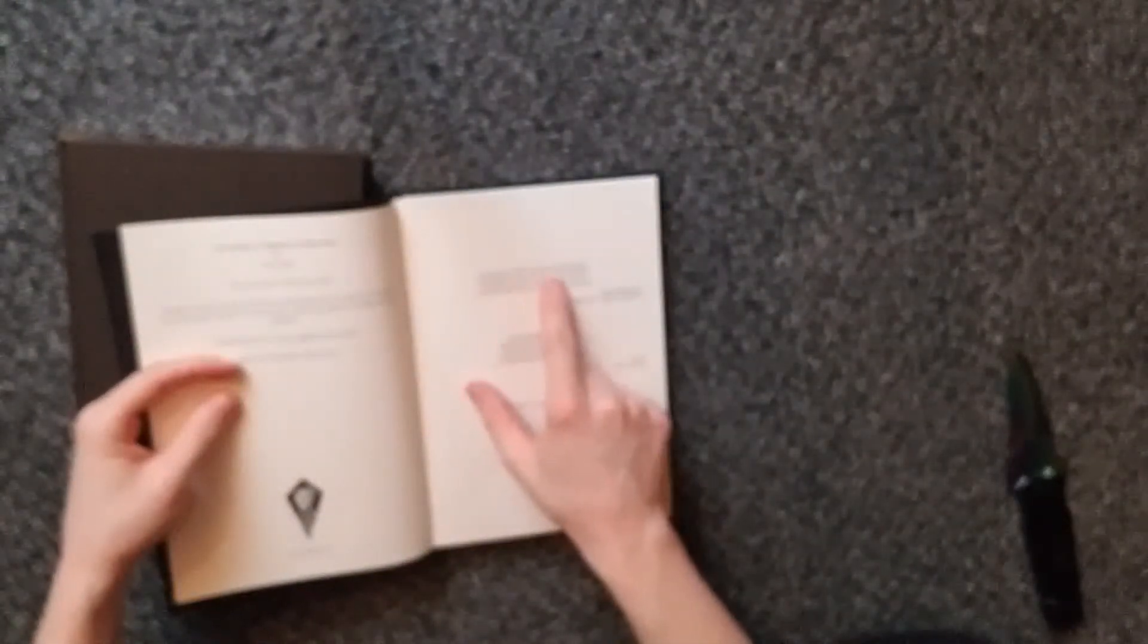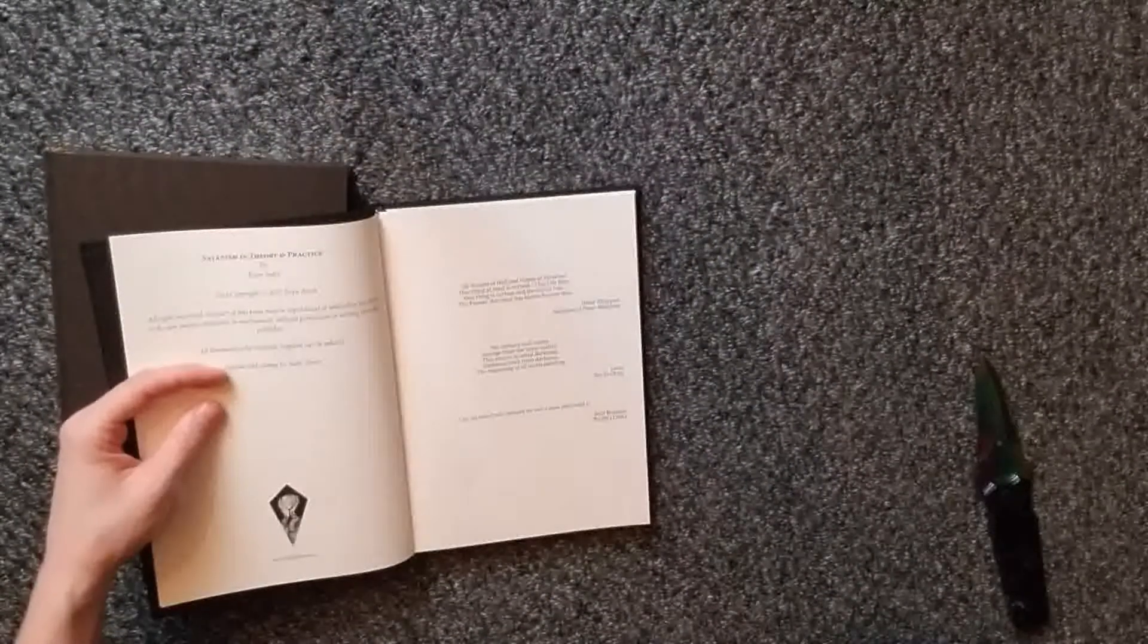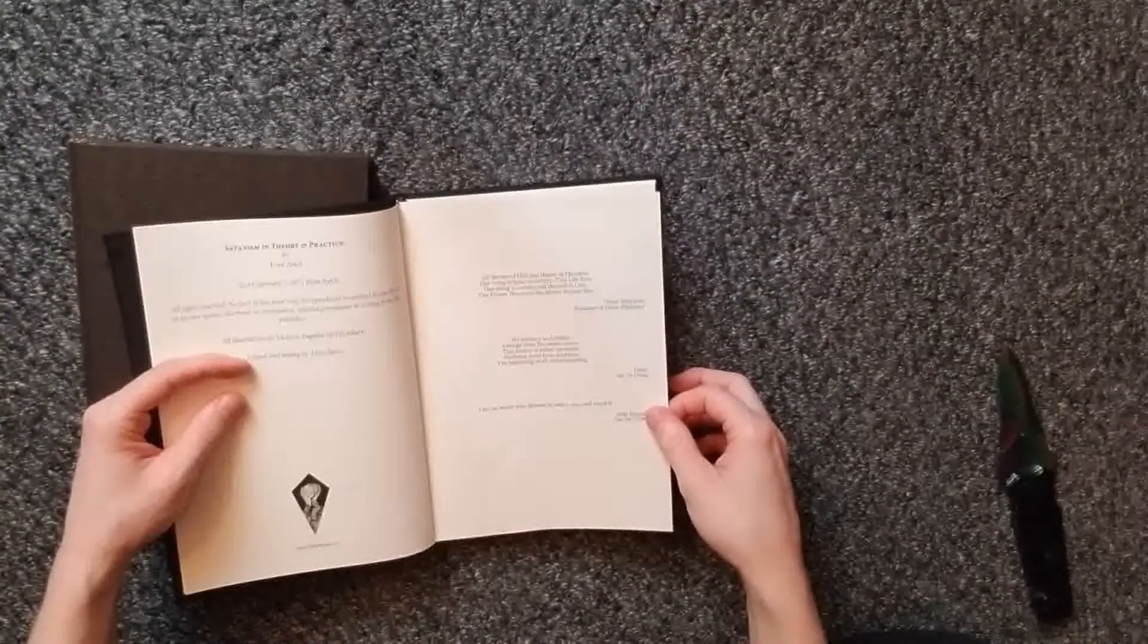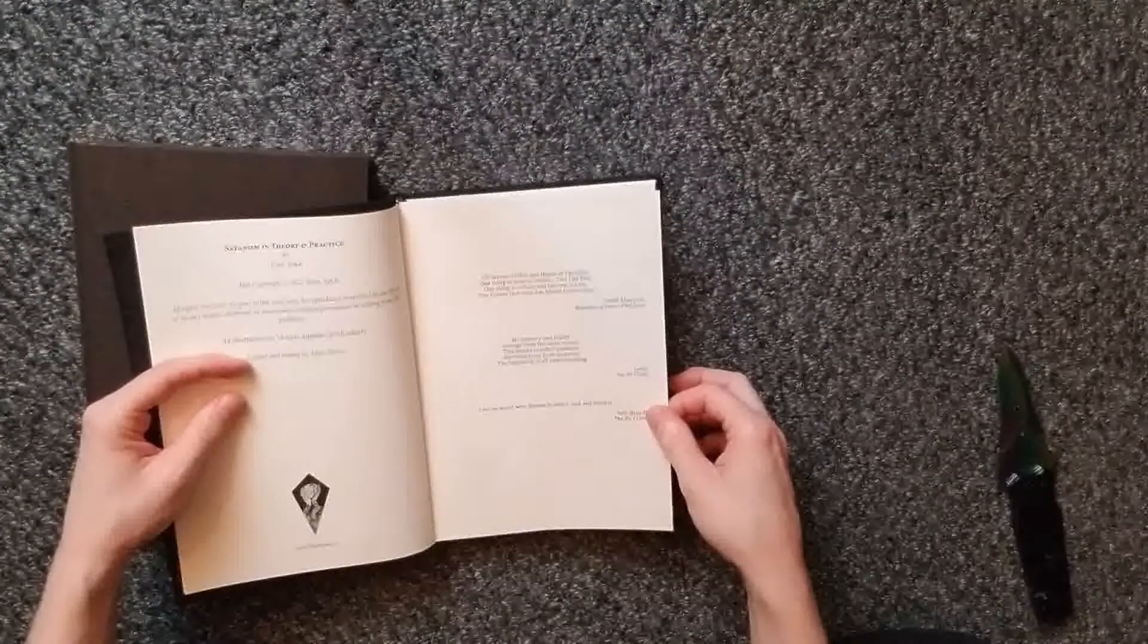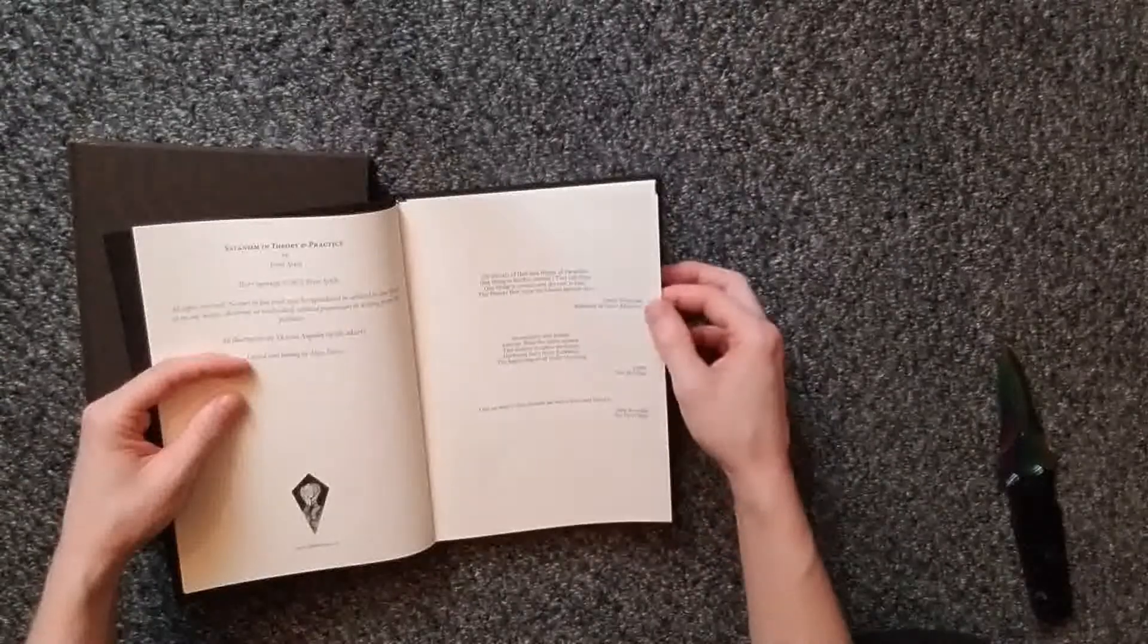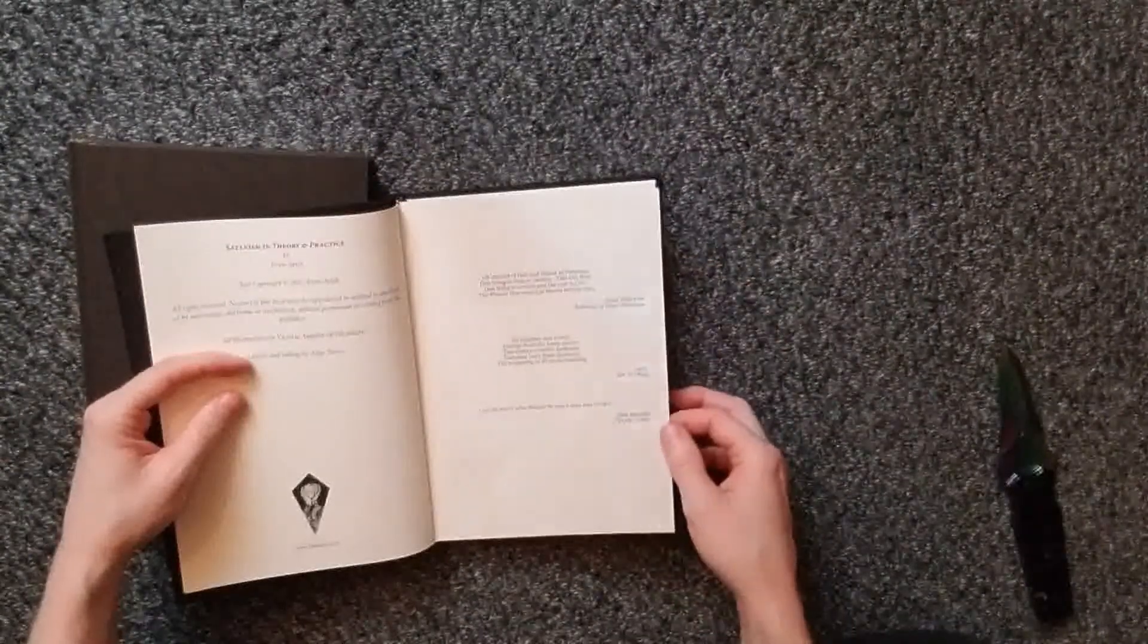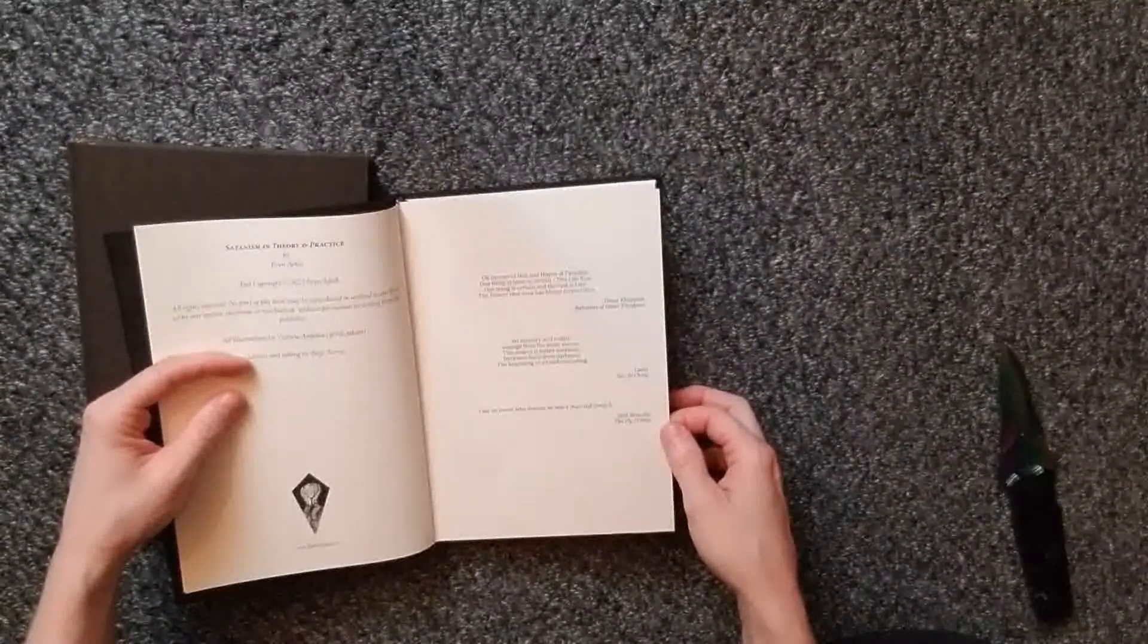Threats of hell and hopes of paradise. I really need a better camera, y'all. Threats of hell and hopes of paradise. One thing at least is certain, this life flies. One thing is certain and the rest is lies. The flower that once has blown forever dies. Omar Khayyam from the Rubaiyat. Highly recommend reading the Rubaiyat, by the way, for anyone here who's never heard of it.